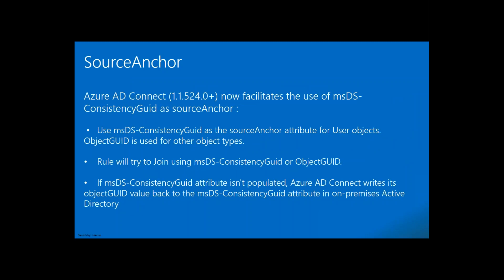The latest version of Azure AD Connect uses MS-DS Consistency GUID as the source anchor. Employee IDs sometimes get changed, which would cause AD Connect to fail — that's why Azure AD Connect now takes MS-DS Consistency GUID as the source anchor. Based on that, it syncs, sees updates, and proceeds with the import, export, and synchronization process.